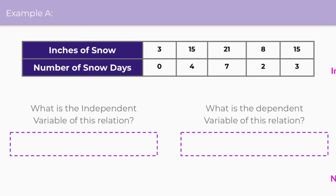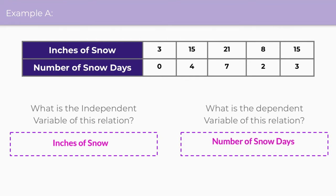In example A, we have a table with inches of snow and number of snow days, and it wants us to label the independent variable and the dependent variable. The independent variable is our x value, our input — it's the thing that controls the dependent variable. Do the inches of snow control the number of snow days, or do the number of snow days control how many inches of snow there are? The inches of snow is the independent variable because it controls the number of snow days, which is the dependent variable.